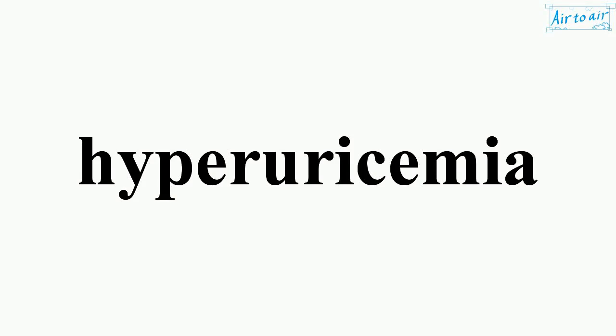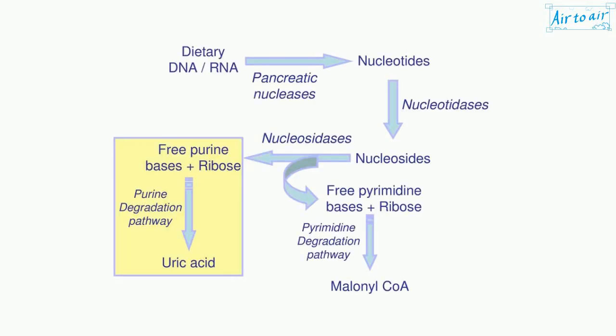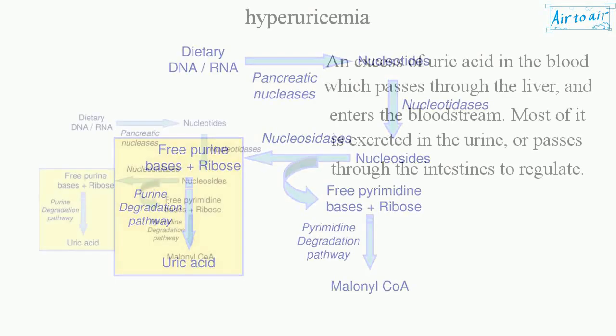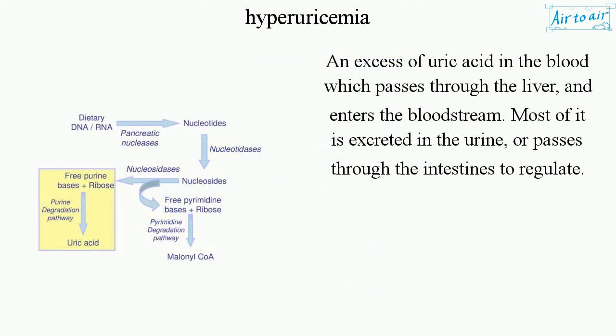Hyperuricemia — an excess of uric acid in the blood, which passes through the liver and enters the bloodstream. Most of it is excreted in the urine or passes through the intestines to regulate normal uric acid levels.